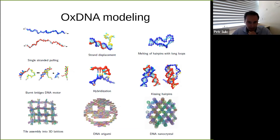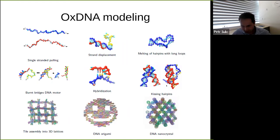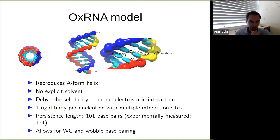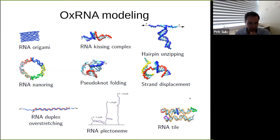With the advancement of GPU computing we've been able to scale up the sizes of systems we can simulate. We started with the model about 10 years ago, at which time we were looking at things like pulling on single strands or strand displacement reactions. In our yet-unpublished data, we are able to simulate DNA nanocrystals with 2 million nucleotides or more — all thanks to GPU computing. We also have a similar model for RNA, applied to RNA nanotechnology including basic biophysical properties, RNA origami, and RNA tiles.